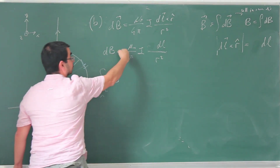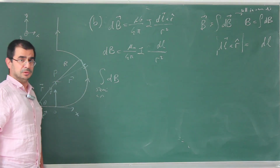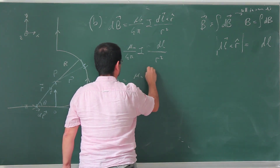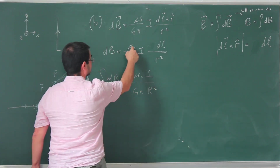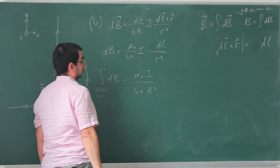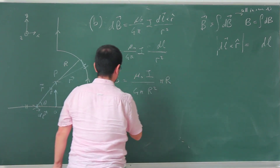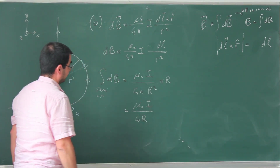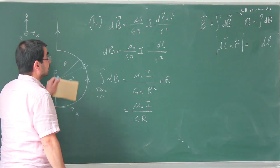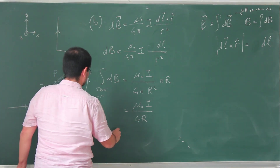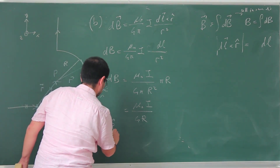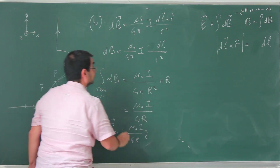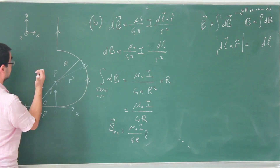So the magnetic field from the semicircle is mu_0 I over 4pi times pi times R divided by R squared, which simplifies to mu_0 I over 4R. The magnetic field due to the semicircle is mu_0 I over 4R in the k-hat direction. For part A, the result was mu_0 I over 4pi R in the k-hat direction. In both cases we indicate direction as positive z, which is k-hat.